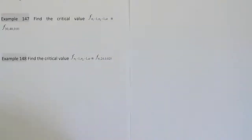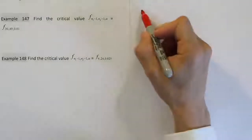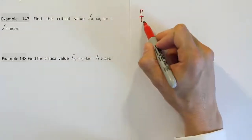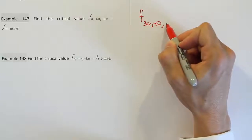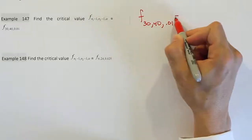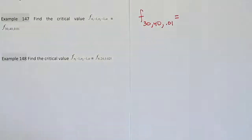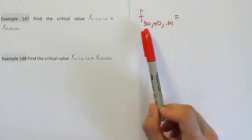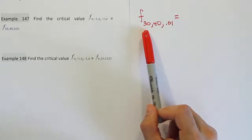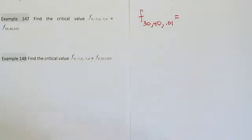So let's actually just write out the notation and then we'll find the answer. So we're looking for the F 30 comma 40 critical value on the 0.01 table. Let's see what that turns out to be. Let's go to that F table now. We'll go to the 0.01 significance level table and look up 30 degrees of freedom in the numerator, 40 in the denominator, and let's see what it gives us.